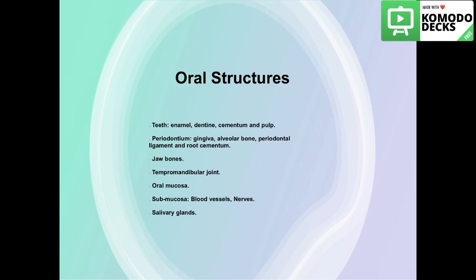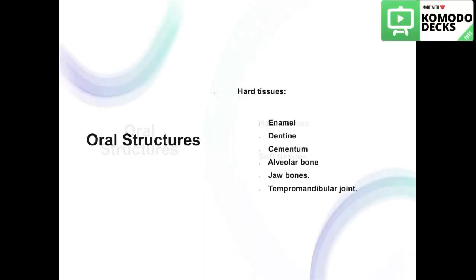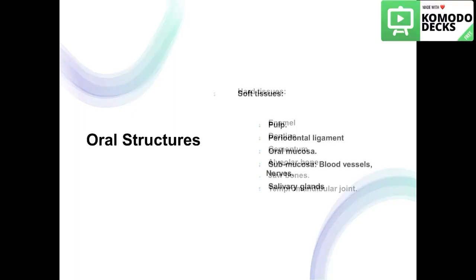Afterwards, we will talk about other oral structures like the jaw bones, the temporomandibular joint, the oral mucosa and submucosa. We will also see under the microscope all the blood vessels and nerves that supply these structures, and we will talk about the salivary glands and the embryology of all the above-mentioned structures. We can divide these oral structures into hard tissues — the enamel, dentine, cementum, alveolar bone, jaw bones, and temporomandibular joint — and soft tissues — the pulp, periodontal ligament, oral mucosa and submucosa, and the salivary glands.